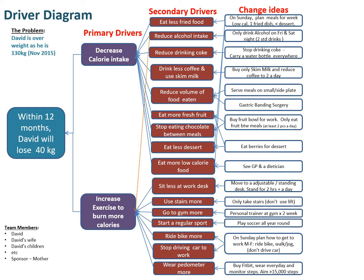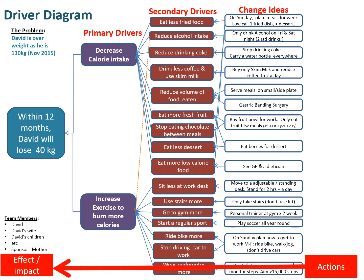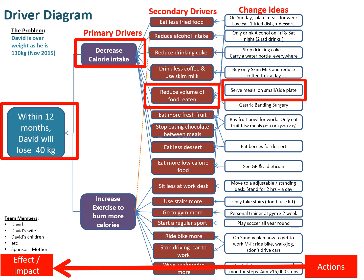It's interesting because several of your change concepts might address one, two or three of the secondary drivers. A driver diagram reads like a story — you have actions on the right and the effect or the impact on the left. So if David serves his meals on a small side plate, he will reduce the volume of food eaten, which will decrease his calorie intake. So hopefully within 12 months, he will lose 40 kilos.